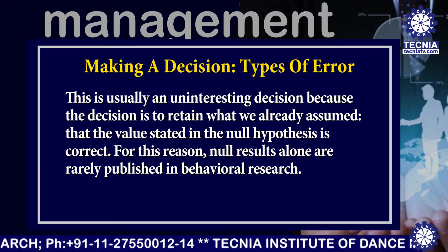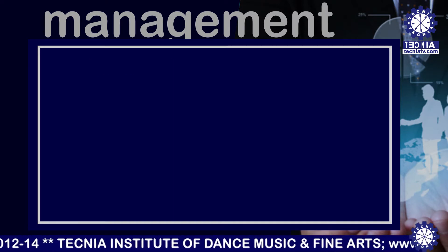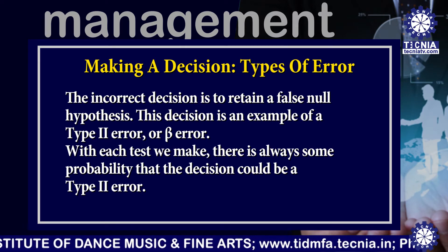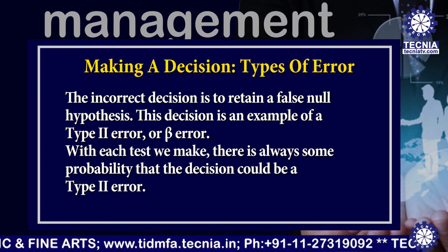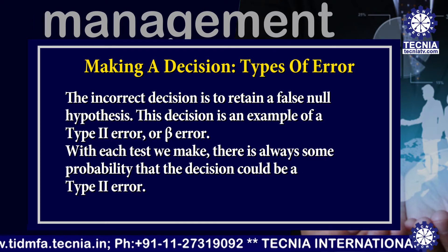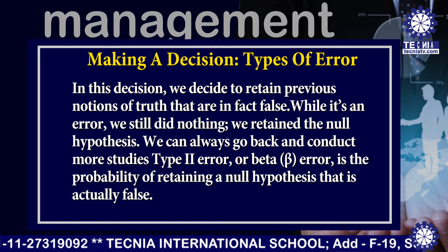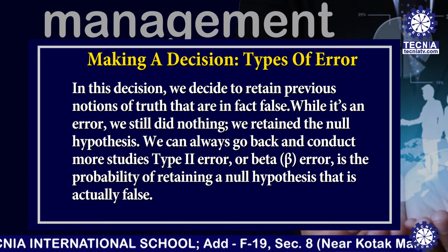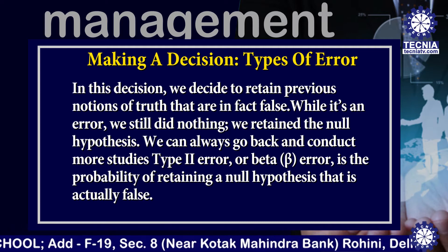For this reason, null results alone are rarely published in behavioral research. The incorrect decision is to retain a null hypothesis. This decision is an example of a Type 2 error, or beta error. With each test we make, there is always some probability that the decision could be a Type 2 error. In this decision, we decide to retain previous notions of truth that are in fact false. While it is an error, we still did nothing — we retain the null hypothesis.